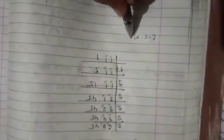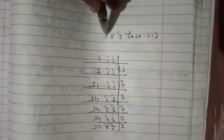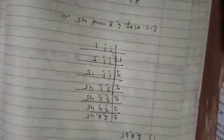Now the LCM of 6, 8, and 45 is 2 × 2 × 2 × 3 × 3 × 5, which is equal to 360.